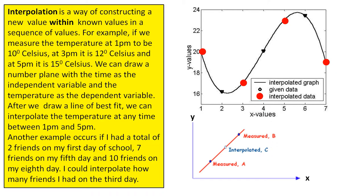Interpolation is a way of constructing a new value within known values in a sequence of values. For example, if we measure the temperature at 1pm to be 10 degrees Celsius, at 3pm it is 12 degrees Celsius and at 5pm it is 15 degrees Celsius.